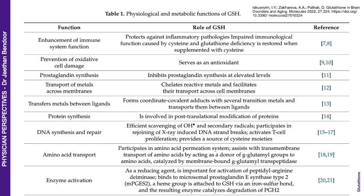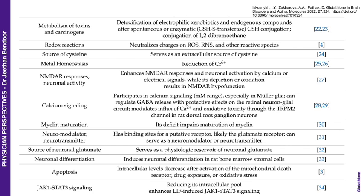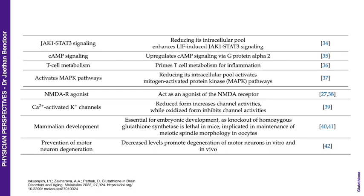Here is a table of the physiological and metabolic functions of glutathione. It works on enhancing the immune system, prevention of oxidative cell damage, prostaglandin synthesis, transport of metals across membranes and transfer of metals between ligands — very important in detoxification of excess metals. It also participates in protein synthesis, DNA synthesis and repair, amino acid transport, enzyme activation and many more. The list is very extensive.